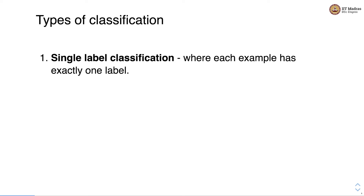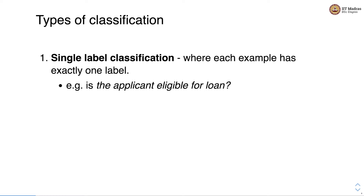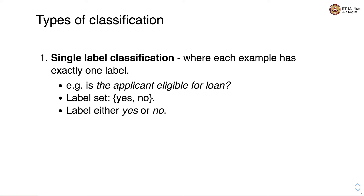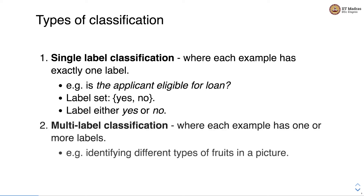Based on the number of labels, we have two types of classification problems. One is single-label classification, where each example has exactly one label. For example, whether the applicant is eligible for a loan — the loan is either approved or not approved, so the label set has two elements: yes and no. The second type is multi-label classification, where each example has one or more labels, such as identifying different types of fruits in a picture.